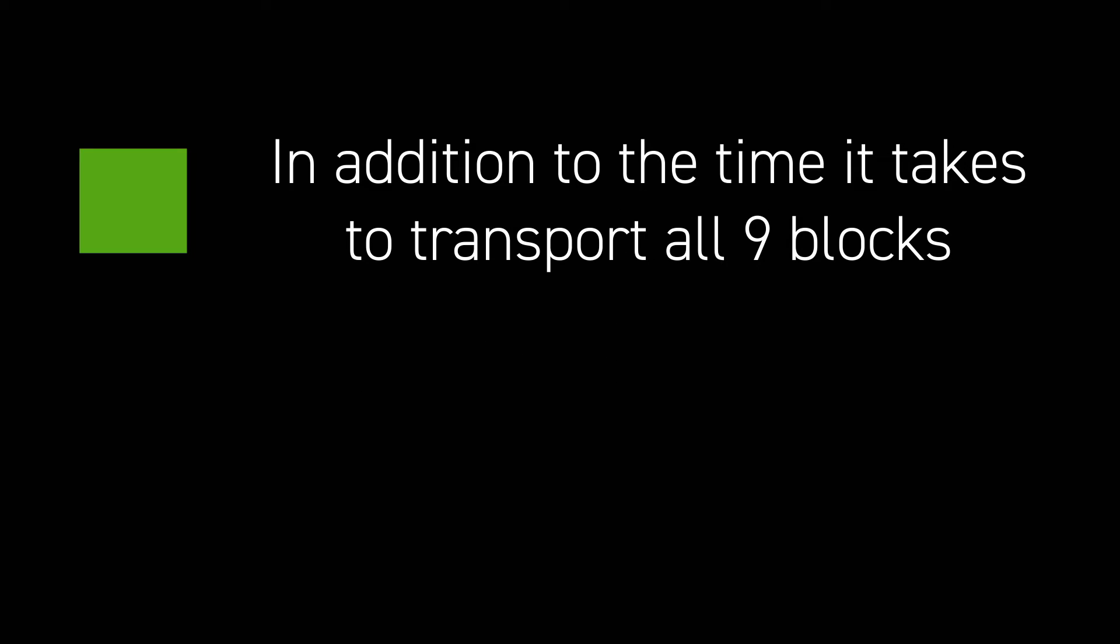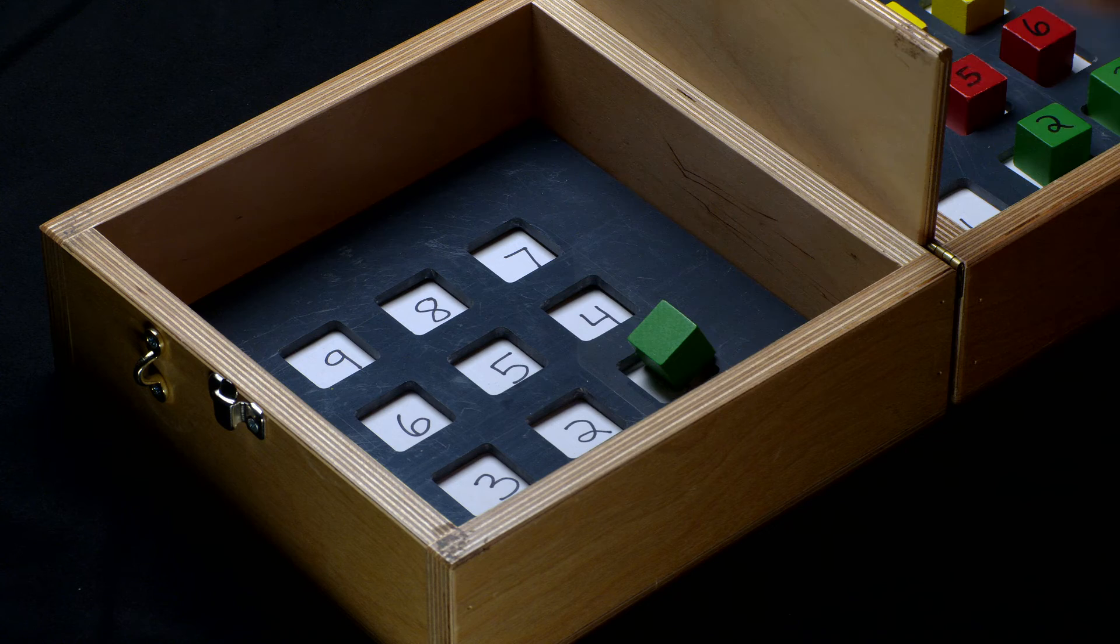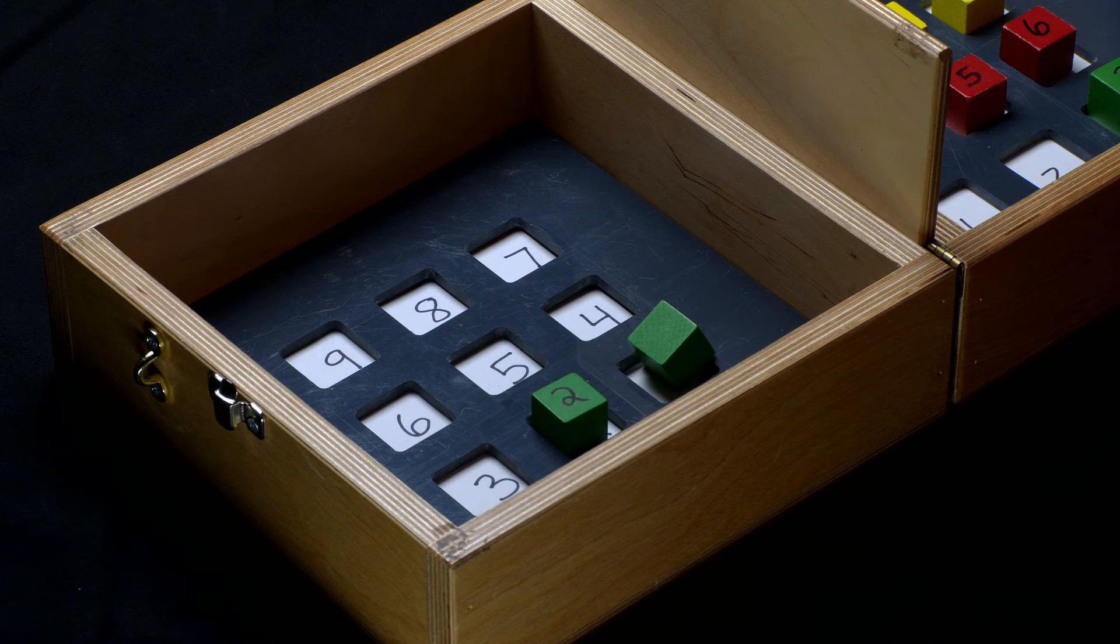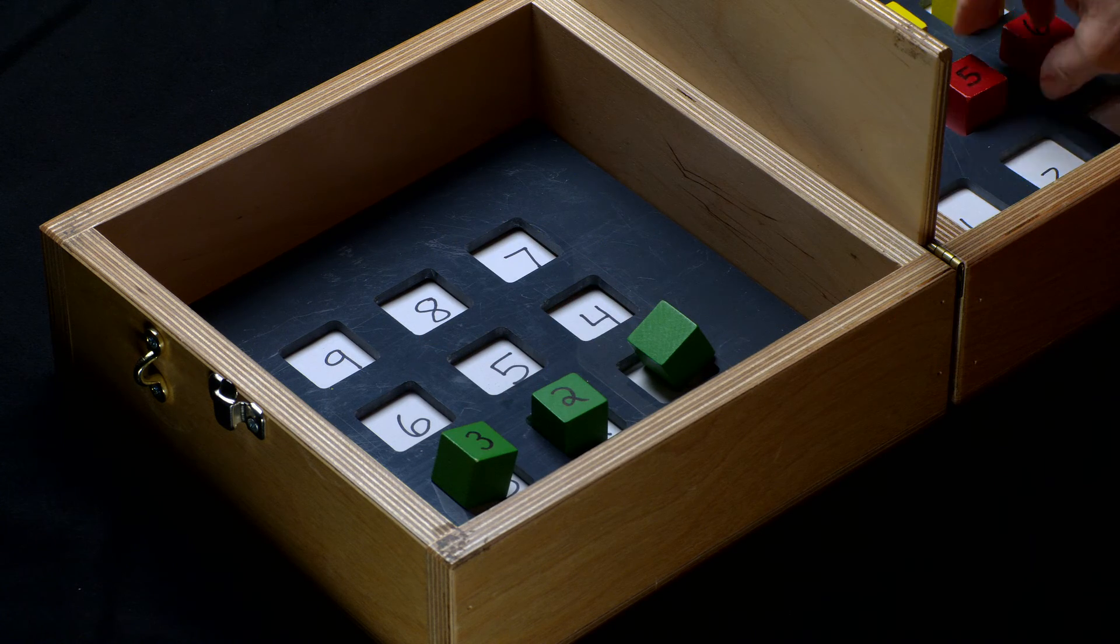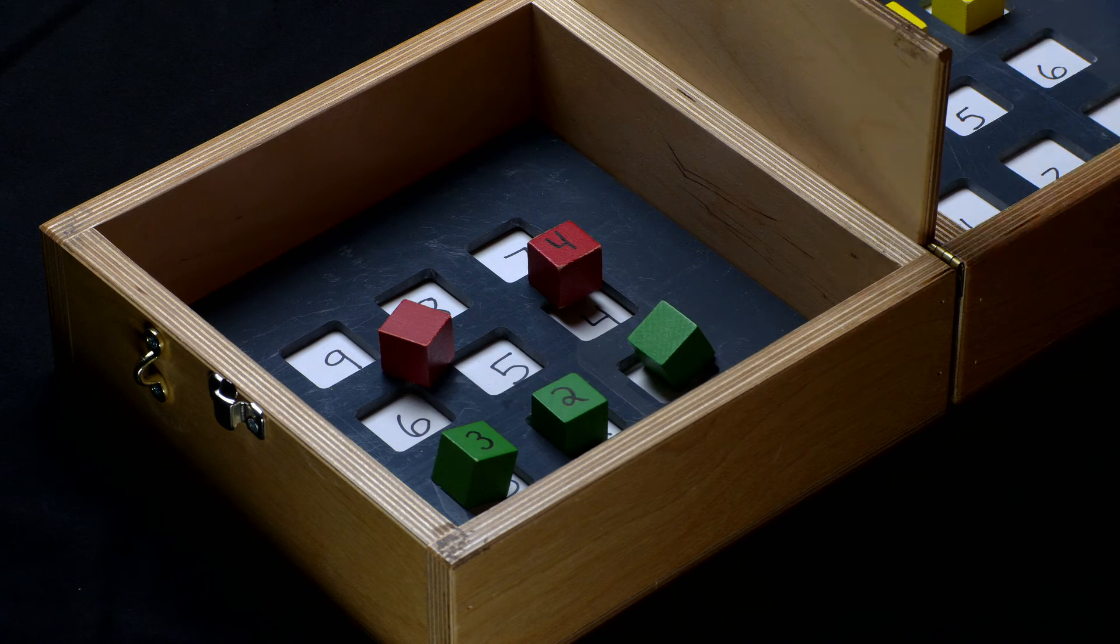In addition to the time it takes to transport all nine blocks, the number of unsuccessful block transports will be tracked. An unsuccessful transport is any block that is not within the target space, leaning against the target grid, or any block that was dropped during the task.